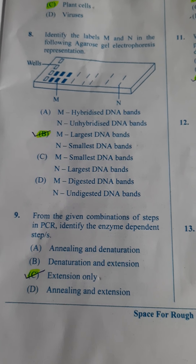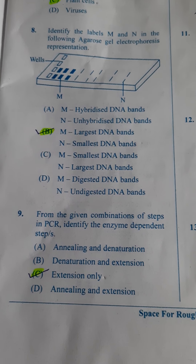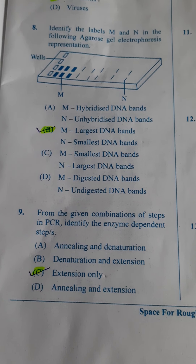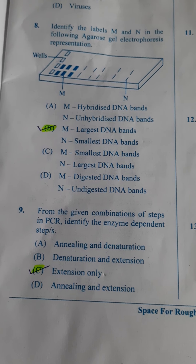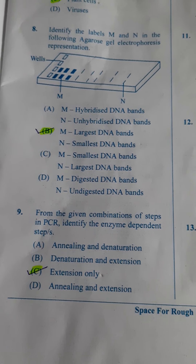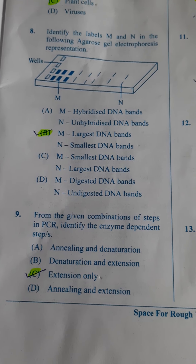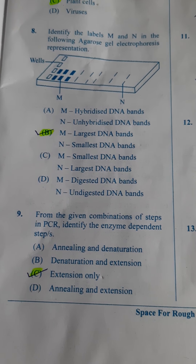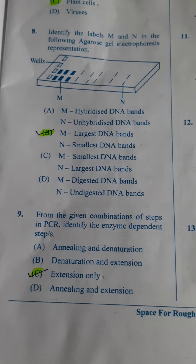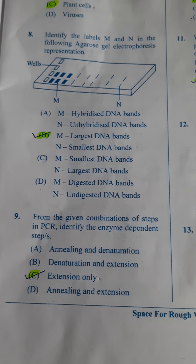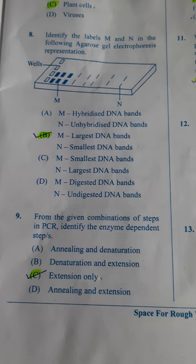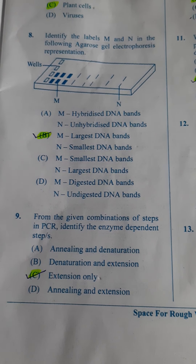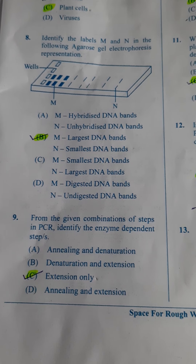Next one: From the given combination of steps in PCR, identify the enzyme-dependent steps. There are three steps in PCR: denaturation, annealing, and extension. Extension is the only step which requires an enzyme called Taq polymerase. So the answer here is extension only.